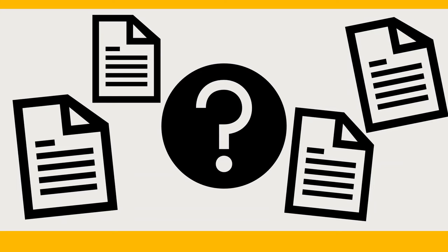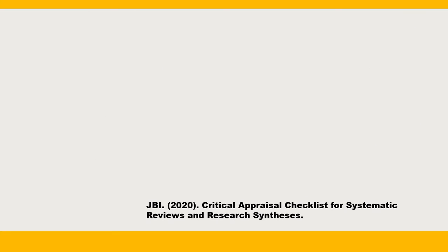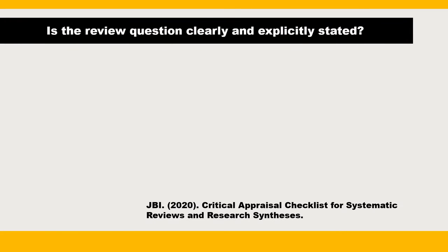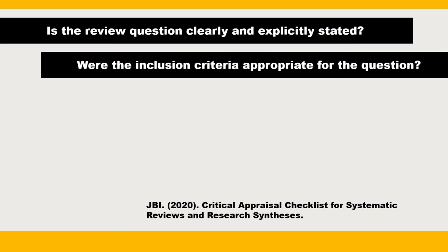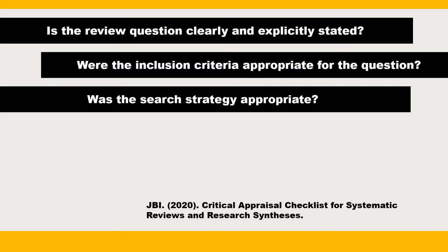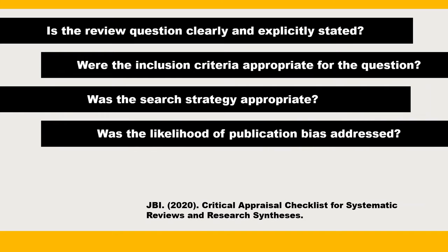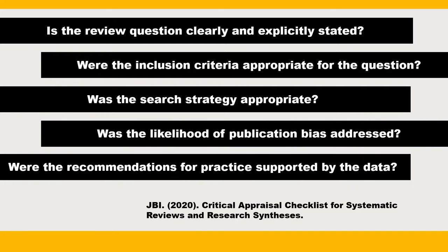Critical appraisal of primary and secondary research evidence can help you assess its validity, relevance, reliability, and quality. Asking the right questions — like what was the research question? Did the authors choose appropriate inclusion criteria? Did they use a sufficient literature search strategy? Is there a chance of publication or other bias? And are the recommendations supported by the data? — can help you identify flaws in the publication's methodology, identify potential biases, and make sense of the results.